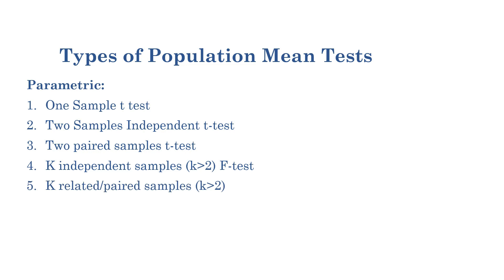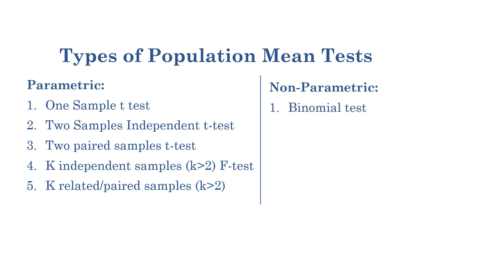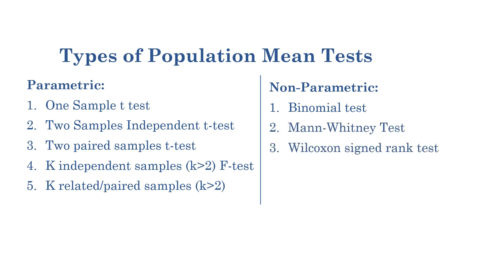The types of non-parametric tests for the population mean are: binomial test, Mann-Whitney test, Wilcoxon, Kruskal-Wallis, and Friedman.